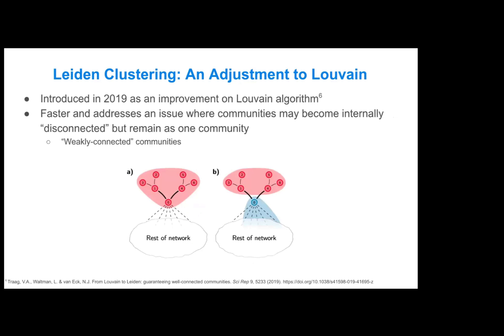One problem with the Louvain algorithm as proposed is that communities may be very weakly connected. If you're moving certain nodes, it's possible that two sub-communities within a community are connected by only one node, as shown here. If you move that connecting node, it may end up in a different community, leaving those two sub-communities disconnected while still being considered one community.